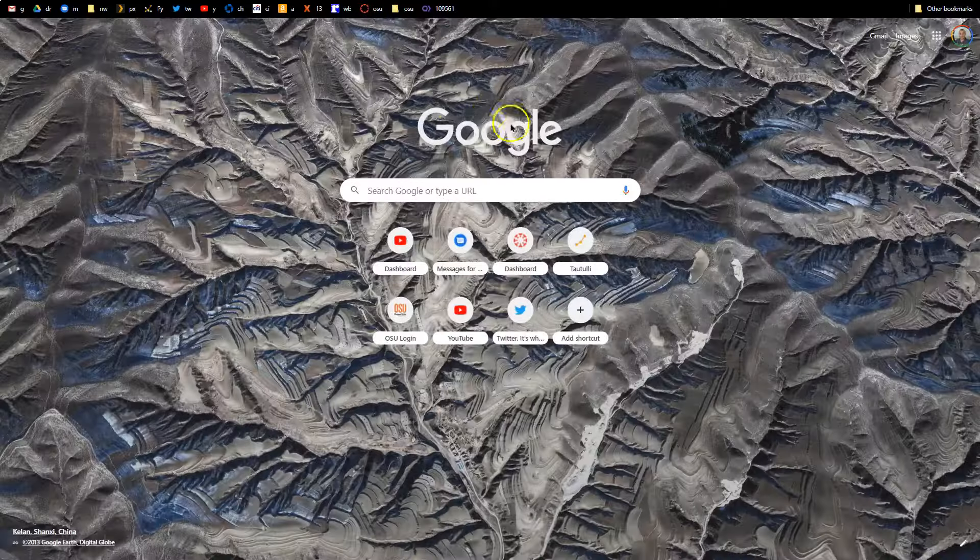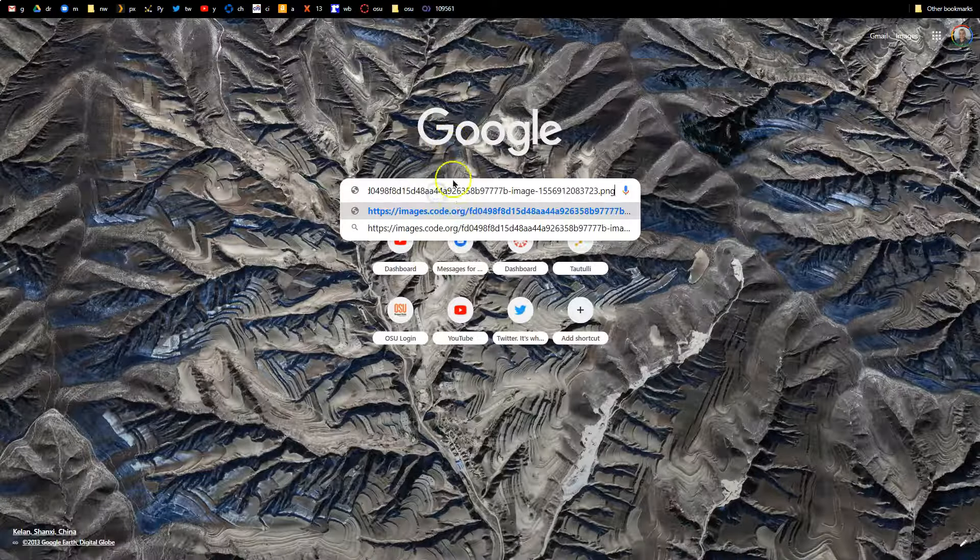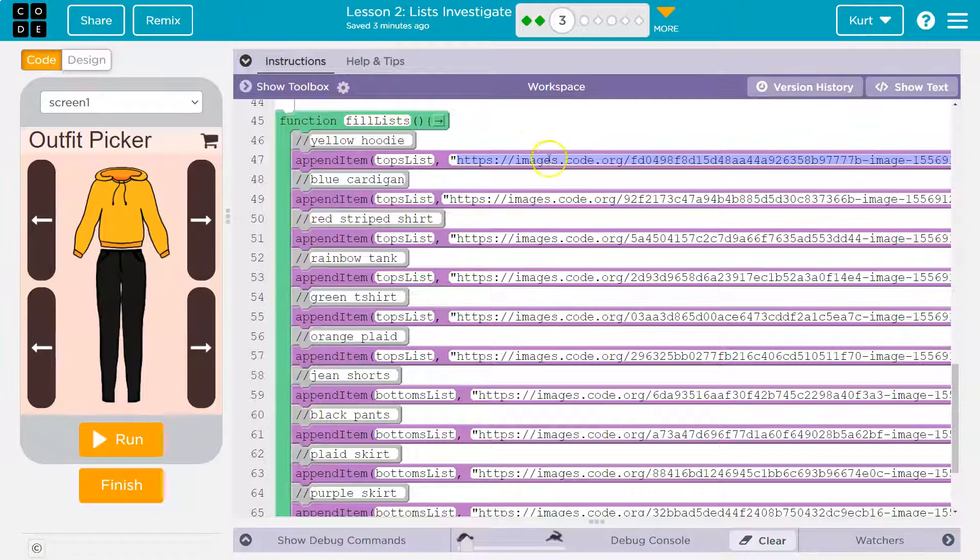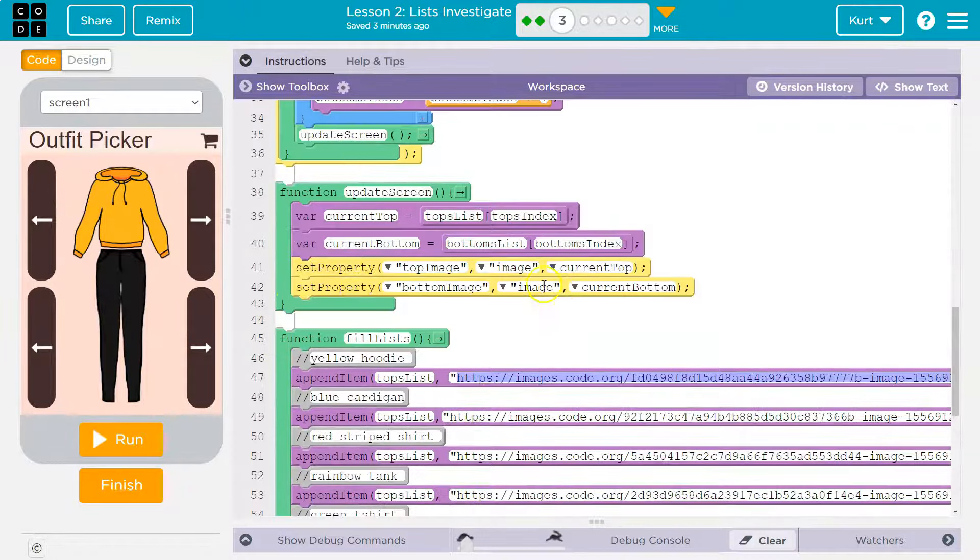So it's grabbing this file and adding it to our list. I can even show you if you look for this, it's going to pop up with the picture, right? So it's just the text form of getting to the picture. And it's saying, hey, add this image here, add this image here, add this image to append item to the top list.